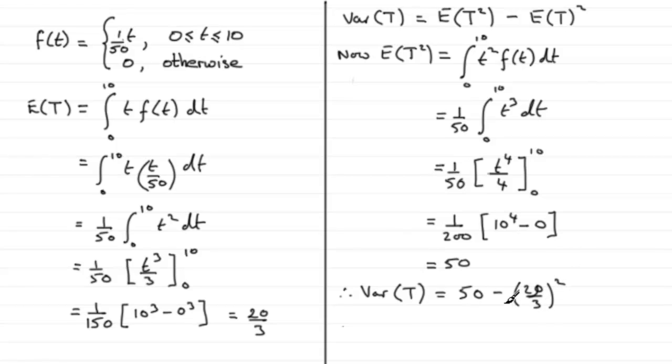And if you work that out, the exact value comes to 50 over 9. So that's how I would certainly set out how to work out E(T) and the variance of T.